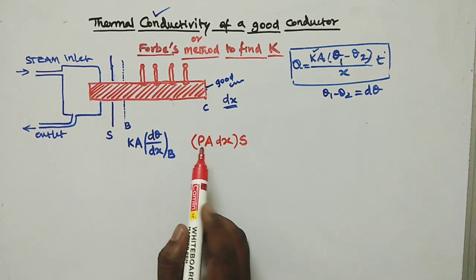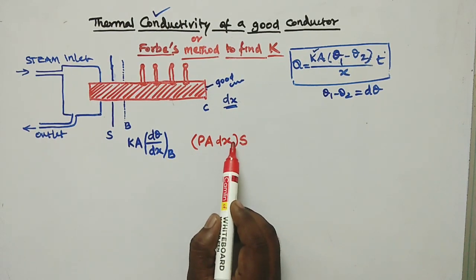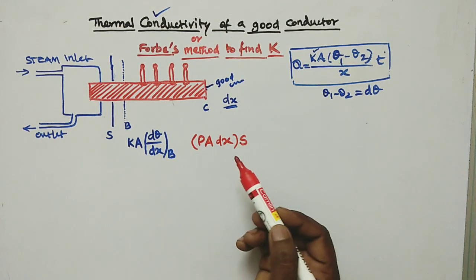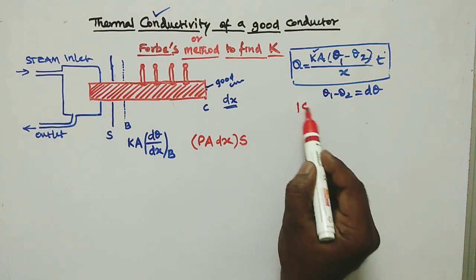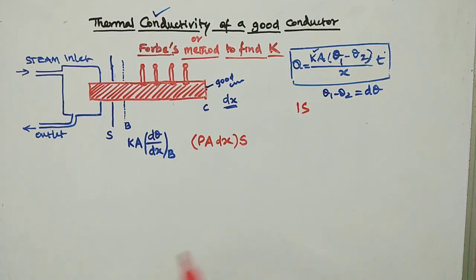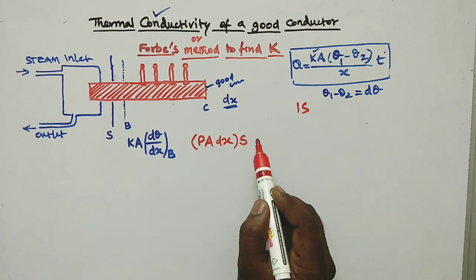In this experiment, we wait for a particular time period and study the result. That particular time period is one second — we measure dθ over a small time dt.